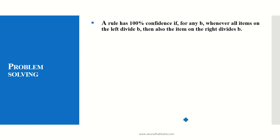A rule has 100% confidence if for any basket B, wherever all items on the left divide B, then also the item on the right divides B. This is the consideration taken, so we will see how it solves.